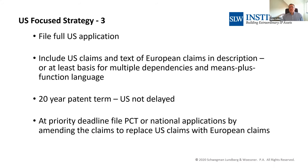A third approach: file the full US patent specification at the beginning. You're limited by US claims, but you can include the text of European claims in the description at the end, providing basis for multiple dependencies and means-for-function language at the back of the specification, so you have full support for a European application. The benefit: the US is not delayed — you go straight into US processing. At the priority deadline, file a PCT application or go straight to national applications by amending the claims to replace US claims with European claims, using the basis you've built into the US application.